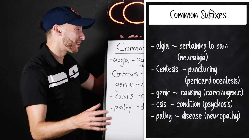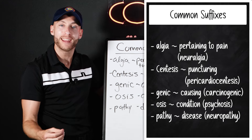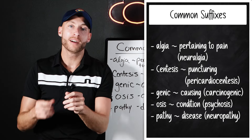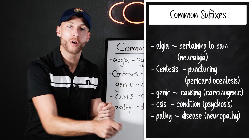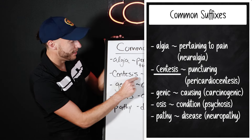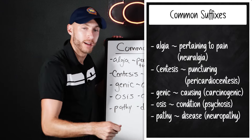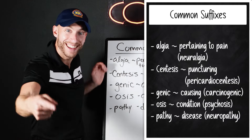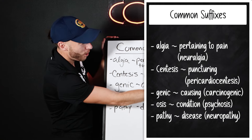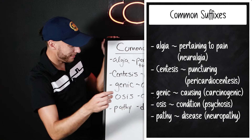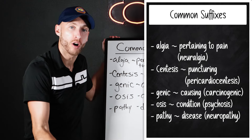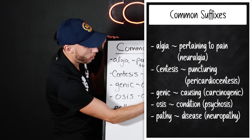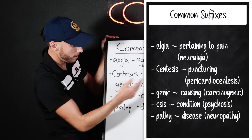Here are our suffixes. '-algia' is pertaining to pain, like neuralgia — pain along a nerve. Moving on to '-centesis,' that's puncturing, like puncturing into the pericardium — that is pericardiocentesis. '-Genic' means causing, so cancer-causing is carcinogenic.